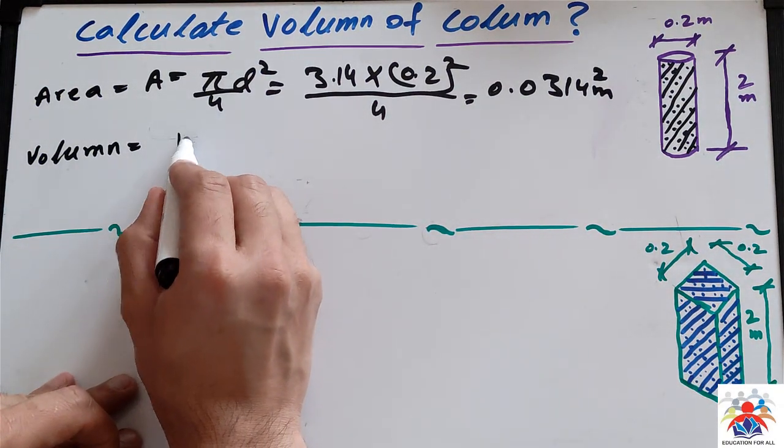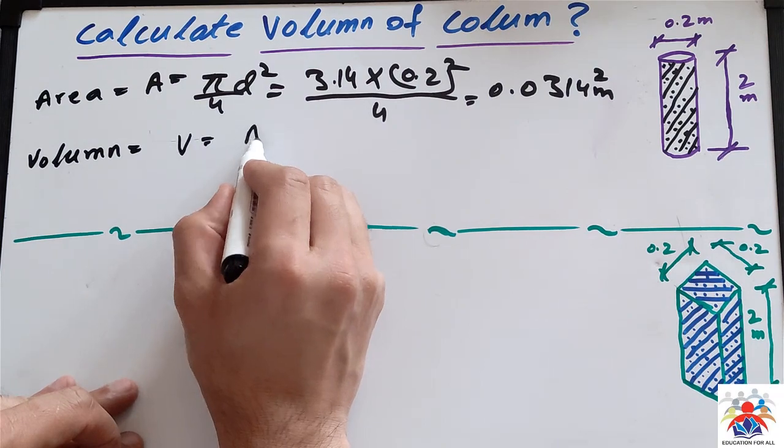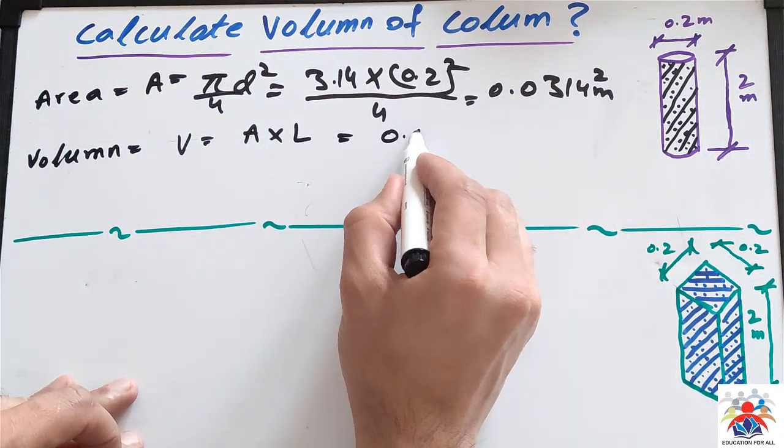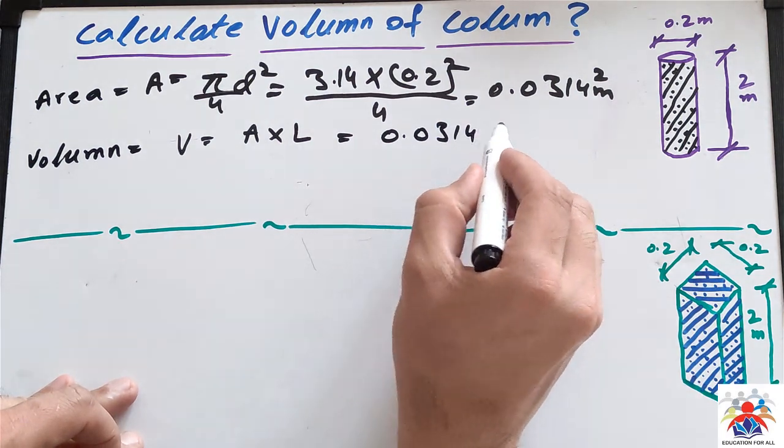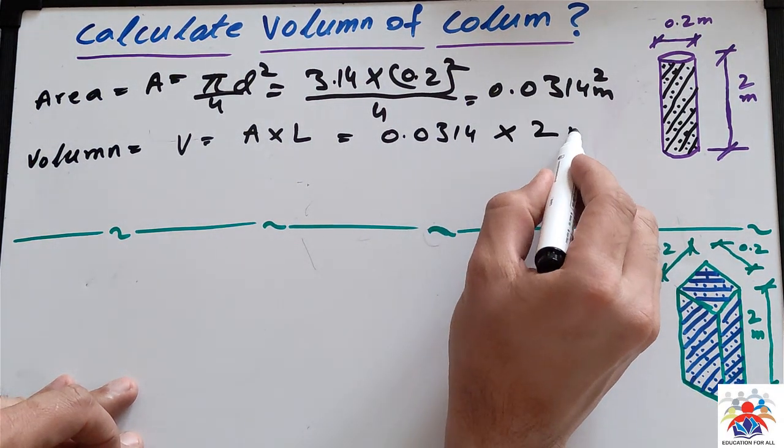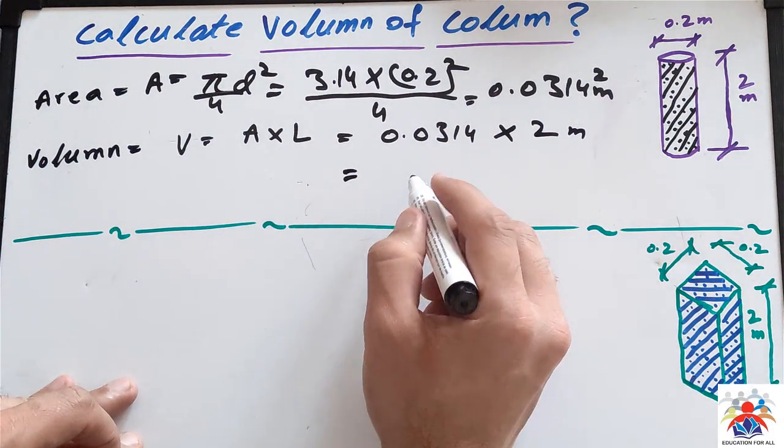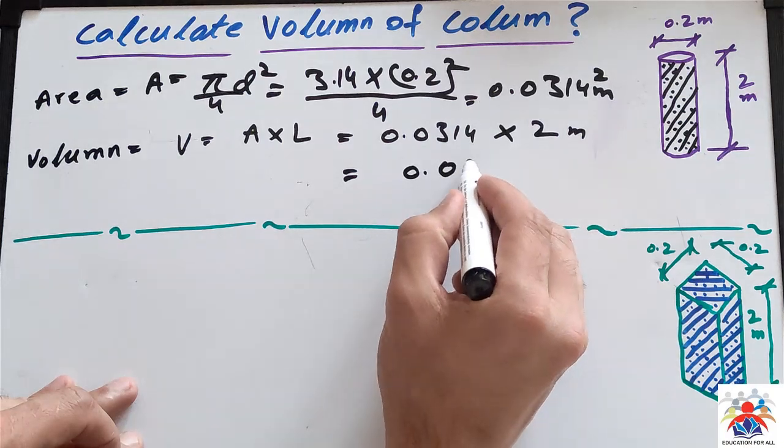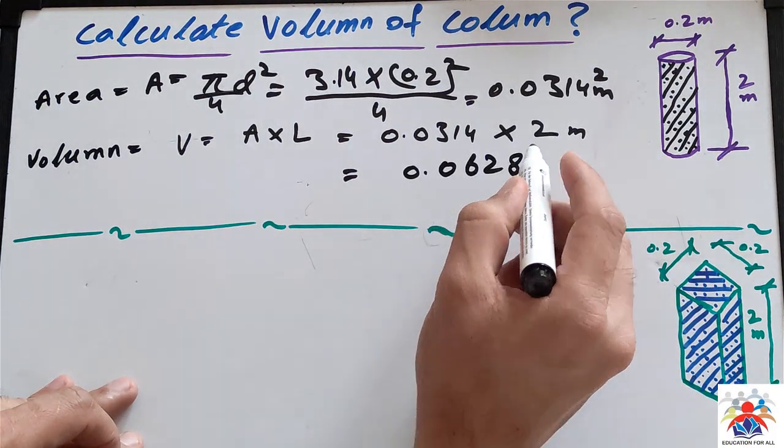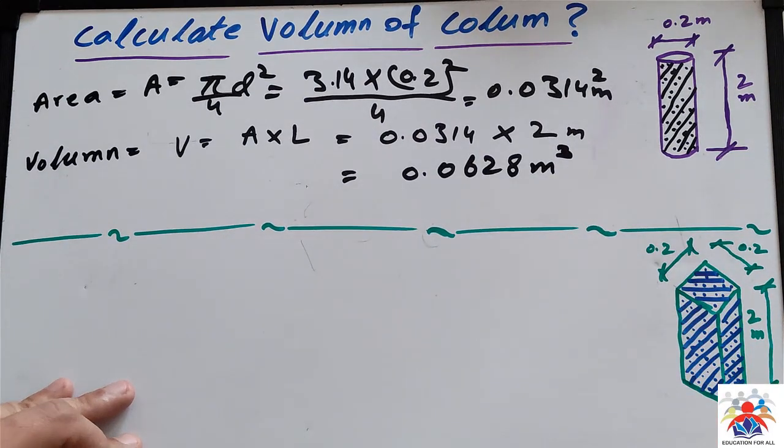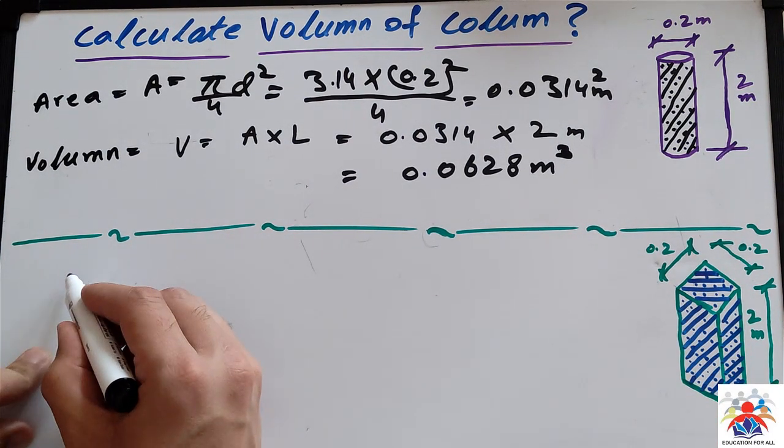Volume equals area multiplied by length, which is 0.0314 × 2 meters, and the final answer is 0.0628 m³. Now moving on to the next column, it's similar but with a little difference.